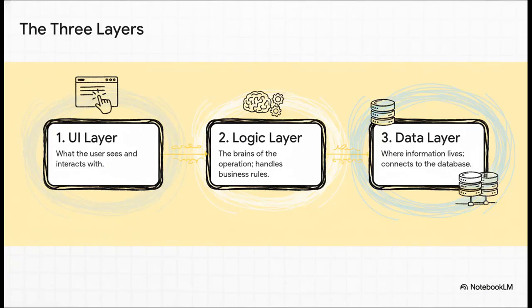So, a senior developer's blueprint almost always has these three distinct layers. First, you've got the UI layer. This is everything the user sees and touches: buttons, forms, the whole visual shebang. Second is the logic layer. That's the brains of the operation, where all the business rules live. And third, the data layer. This is the memory. Its only job is to talk to the database. Each one has one job and one job only.